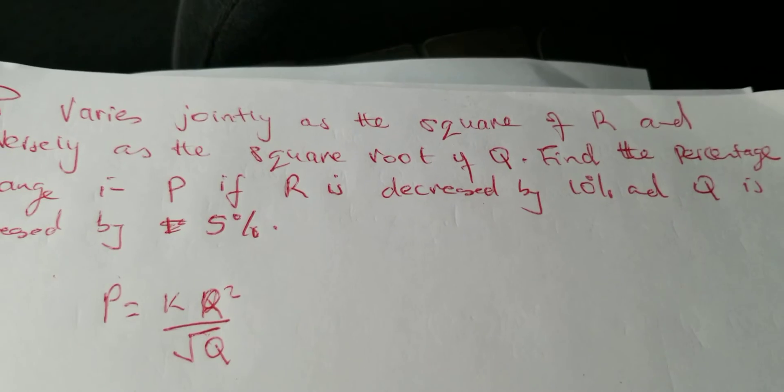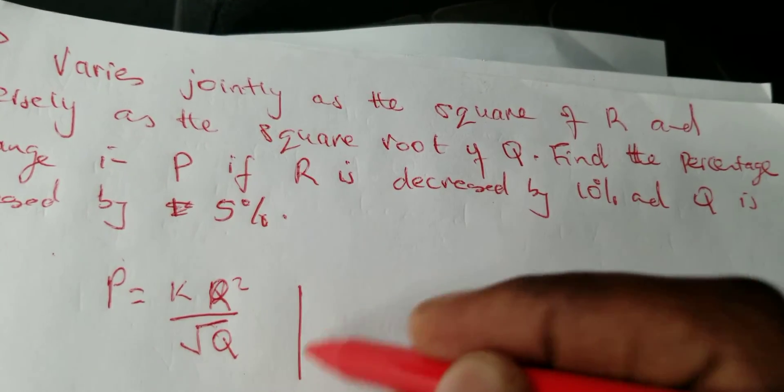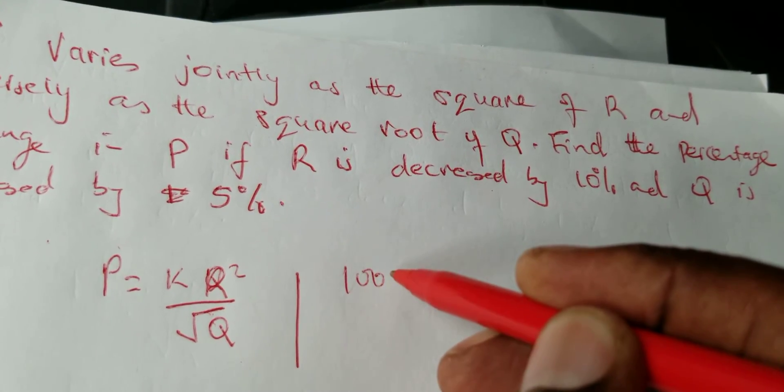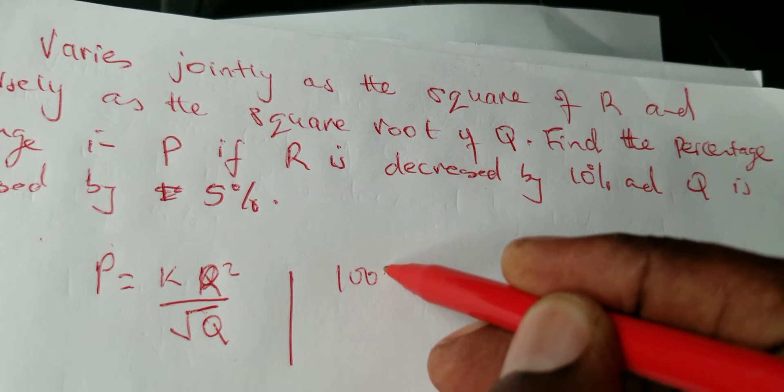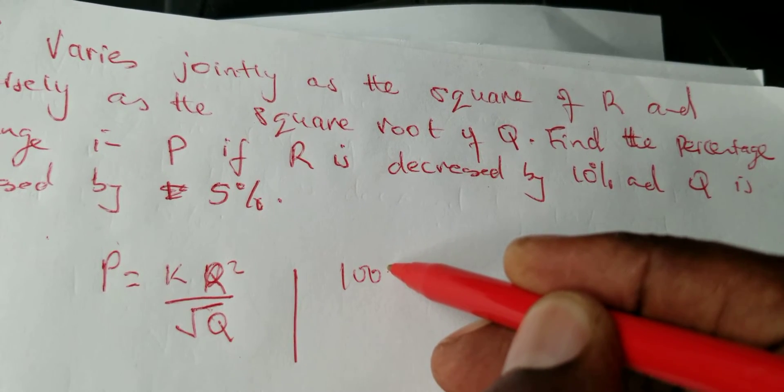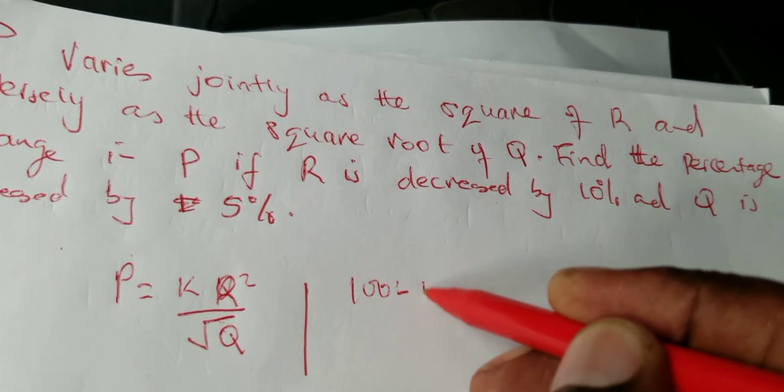So our original R is 100 percent. You subtract 10 and you will get 90 percent.